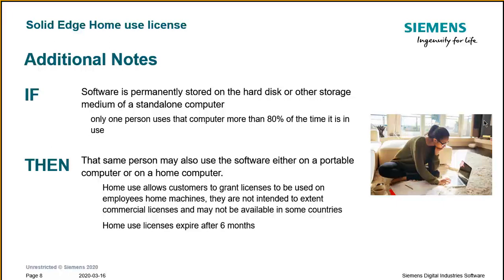Some additional notes about the home use license: keep in mind this is not a production commercial type of license, so there are requirements to be met. If software is permanently stored on a hard disk on a standalone computer, only the one person who uses that computer more than 80% of the time may use this home use license. It can be used on either a portable computer or a home computer. Home use allows customers to grant licenses to be used on an employee's home machine, but they're not intended to extend commercial licenses and may not be available in some countries. The home license usually expires after six months.